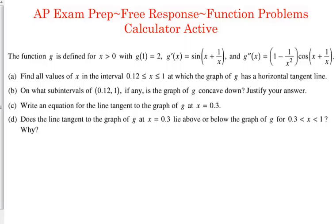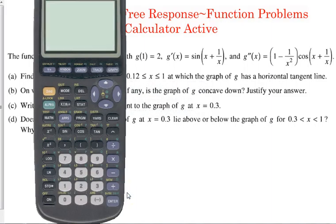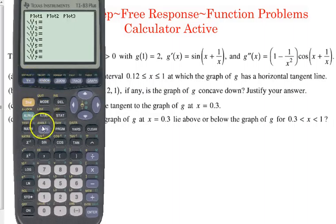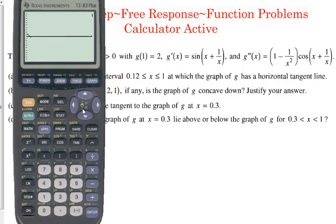So they ask us to find all values of x in the interval for which the graph of g has a horizontal tangent line. Where do horizontal tangent lines occur? At maximums and minimums of the original, so on the derivative, it's where it equals 0. This is calculator active, so literally all you need to do is graph the derivative and find where it crosses between these two points. To help yourself out, when you graph it, you need to go ahead and change your window. Go to your window and make your x values between 0.12 and 1.